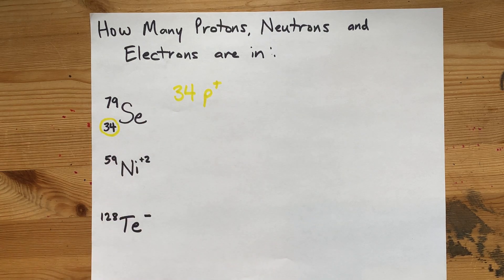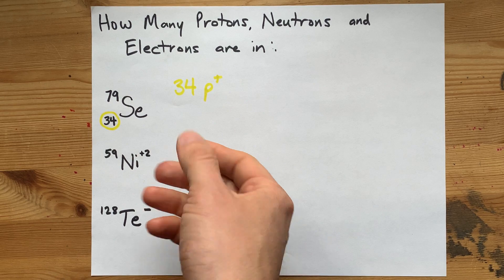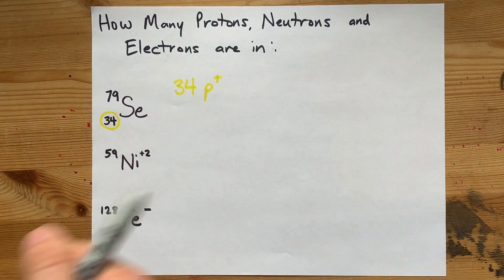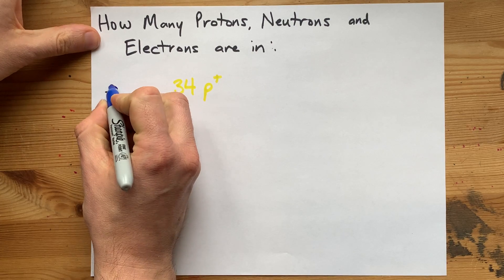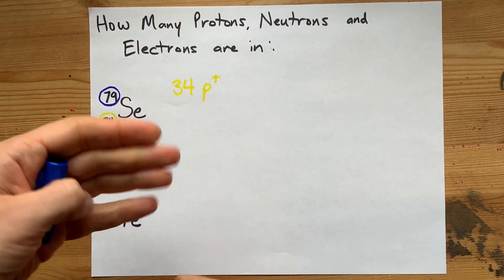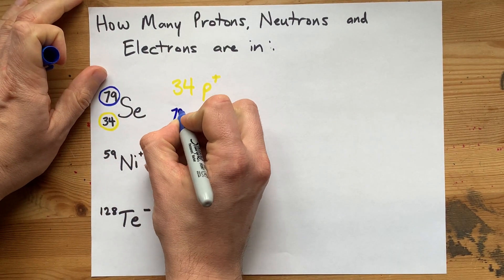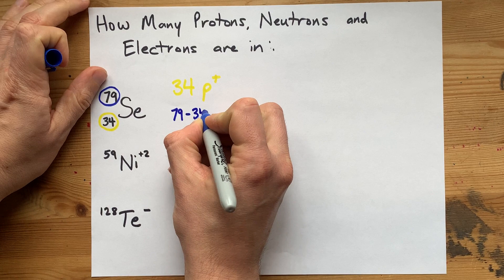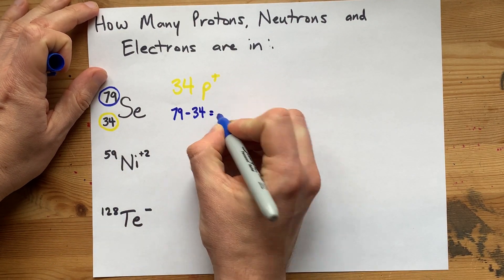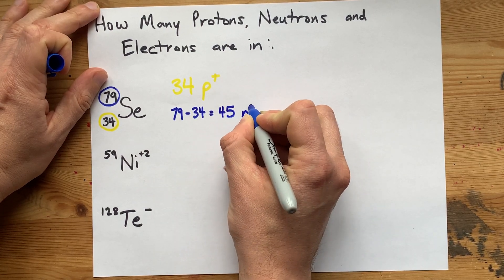Now, how many neutrons are in this particle? That you can't tell from the periodic table unless your teacher hasn't even given you a mass number. But most teachers will. 79 is this mass number. That means there are 79 protons and neutrons combined. So, 79 minus 34, or the difference between those two numbers, is the number of neutrons. We can do that in our head. This one is 45 neutrons.